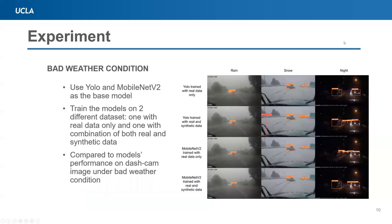In order to demonstrate that our data generation approach can help improve any existing perception model, we will use YOLO and MobileNet V2 as the base models. First, we will train these two models on two different datasets: one with only real data from KITTI and CityScape, and the other is a combination of the real data and the synthetic data generated as described before. Then, we will compare model performance under dash cam images of bad weather conditions.